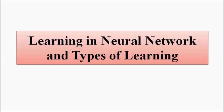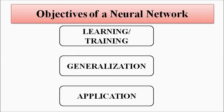The learning process is the most important part of the neural network. We have already discussed that the three main tasks of a neural network are: learning, which is also called training; generalization; and the third step is application. So the learning part, or training, is the training of the neural network.